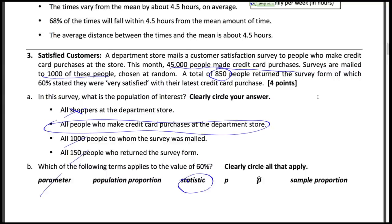It's not a parameter, because that would be what we're trying to estimate for all 45,000 people. And it's not a population proportion. The two symbols, p and p-hat. This one is the statistic, so we want the p-hat. And of course, this is a sample proportion.